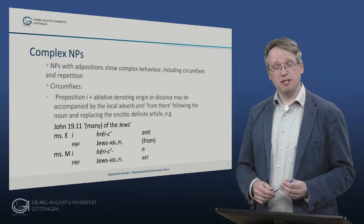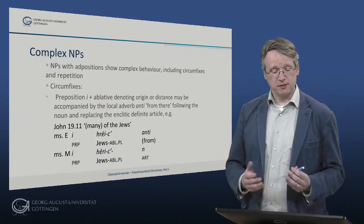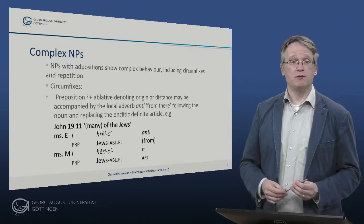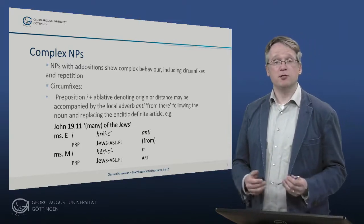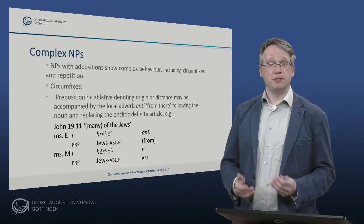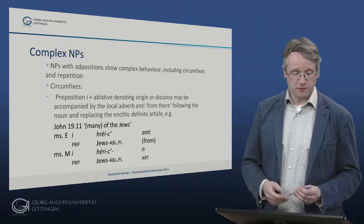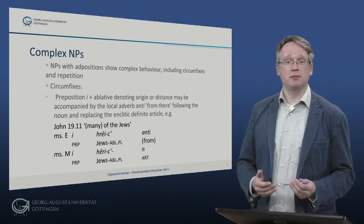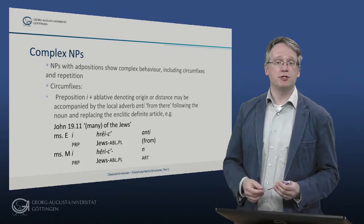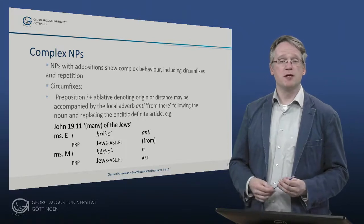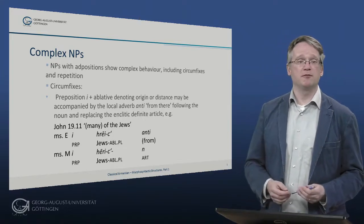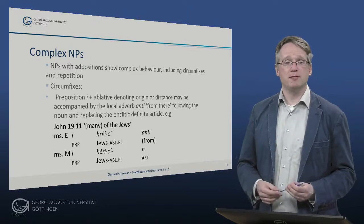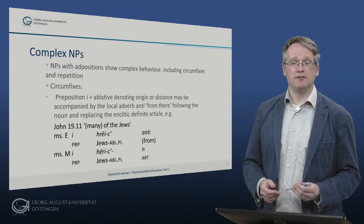As for complex NPs, let's have a look at them. NPs with adpositions, for example, show a complex behavior, including circumfixes and repetition. So circumfixes, for example, with the preposition e plus appellative, which denotes origin or distance. This may be accompanied by the local adverb antiv, meaning 'from there', following the noun and replacing the enclitic definite article.